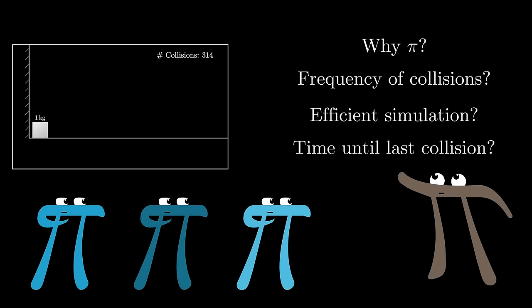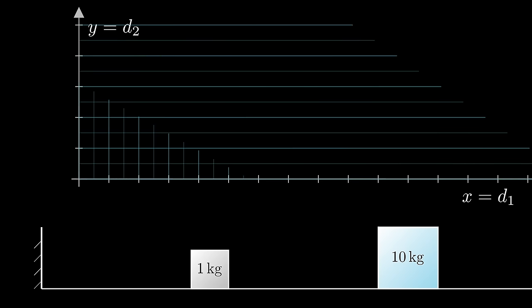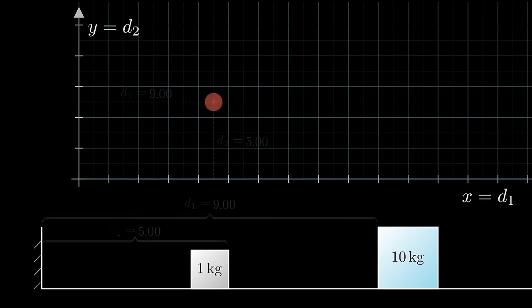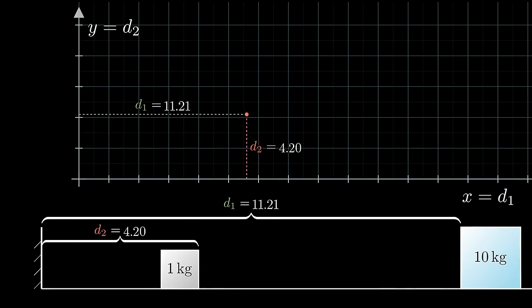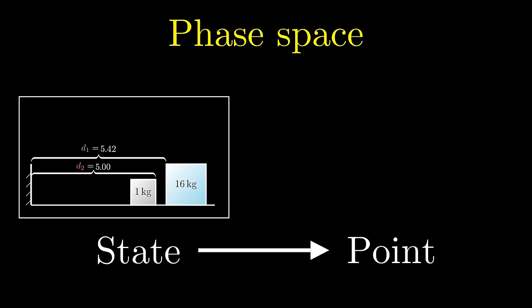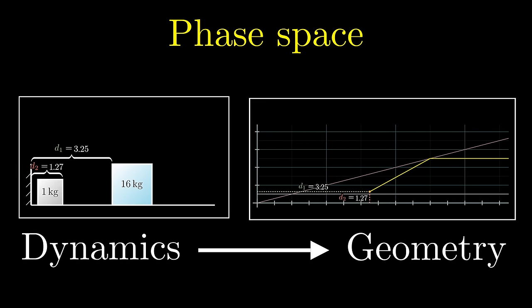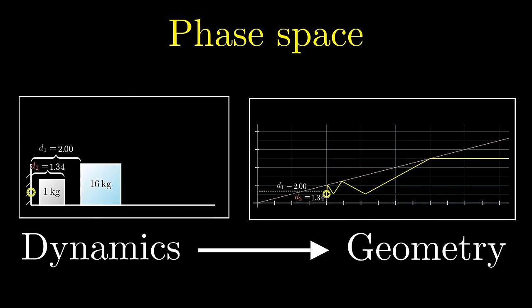The solution from the last video involved a coordinate plane, where each point encodes a pair of velocities. Here we'll do something similar, but the points of our plane are going to encode the pair of positions of both blocks. Again, the idea is that by representing the state of a changing system with individual points in some space, problems in dynamics turn into problems in geometry, which hopefully are more solvable.